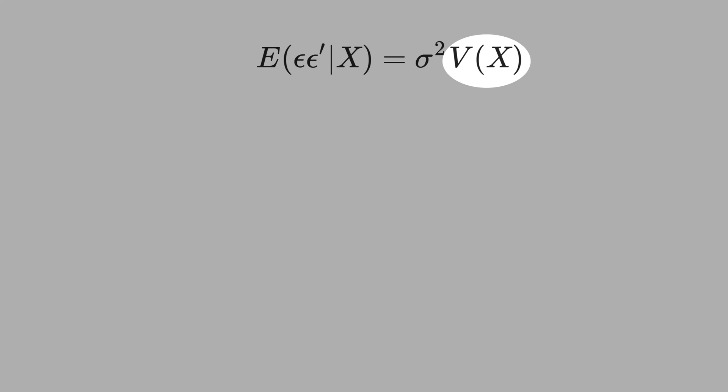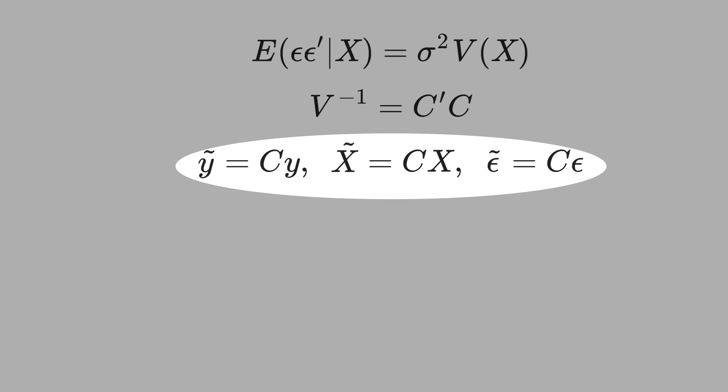Let's define the inverse of V as C-transpose times C. We need this inverse matrix to remove this VX. We can decompose the inverse of V in C-transpose and C because V is a quadratic matrix non-singular. Let's transform the regression.